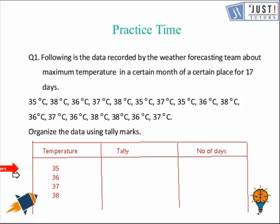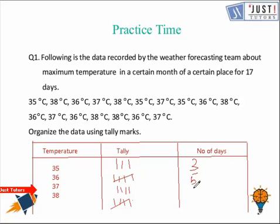Counting the temperatures, we find that 35 appears 3 times, 36 appears 5 times, 37 appears 4 times, and 38 appears 5 times. So the answer to the question is 3, 5, 4, and 5 respectively. This is the answer to our question. Thank you for watching this video. For more, please visit JustTutors.com.